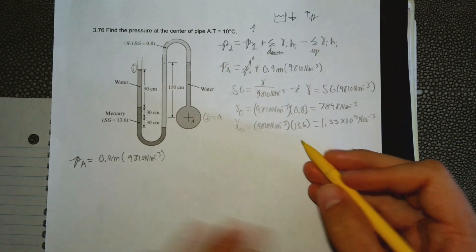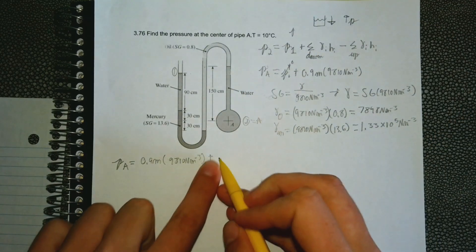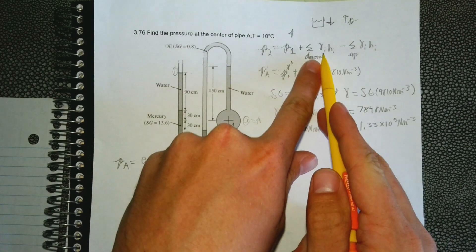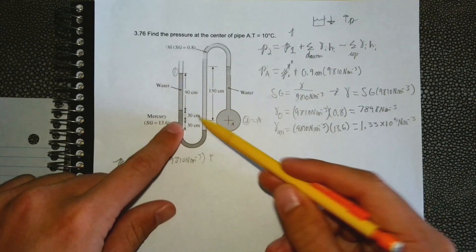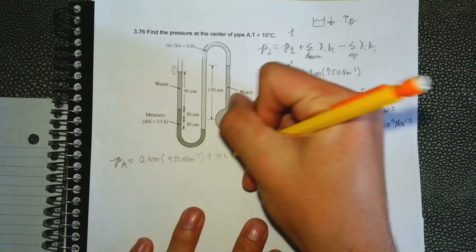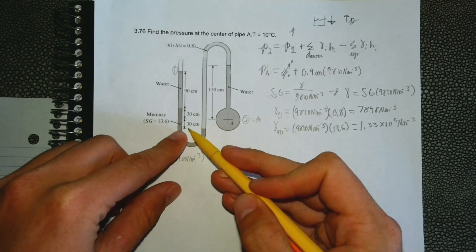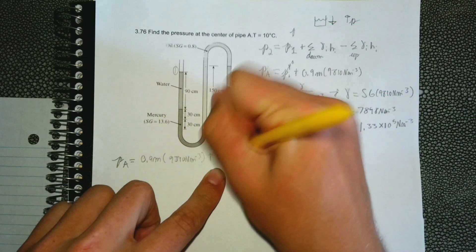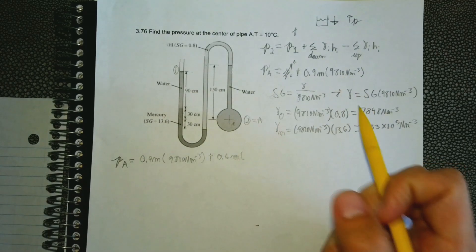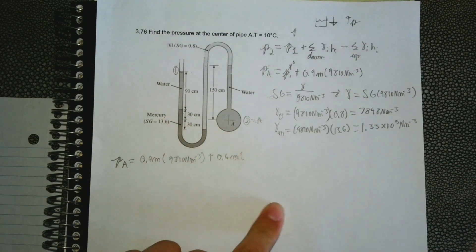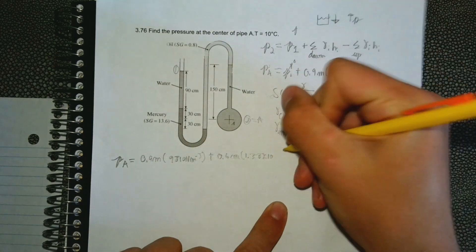Now that we have those, we can continue on to our formula. We're supposed to do, looking at this formula, everything going down. We're going down here, we just left off here, we need to go down a height of 0.6 meters, so 60 centimeters we're going down, converting it to 0.6 meters. Then we need to multiply it by the specific weight of the mercury because that's where we're in right now. We just found that as 1.33 times 10 to the fifth.